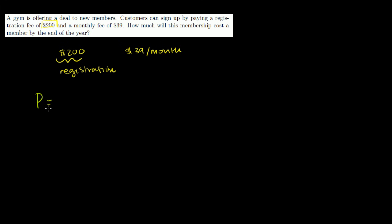So no matter how many months we use the gym, just to start using the gym, we have to pay $200 in registration. So we're going to have to pay $200, and then we're going to have to pay $39 for every month we're there. So then we're going to take the number of months we're there and multiply that times 39.